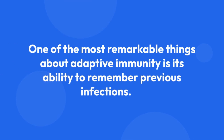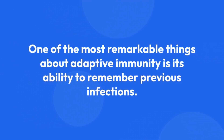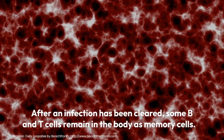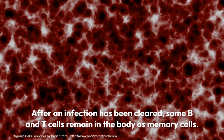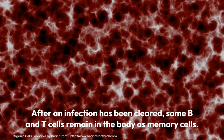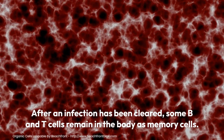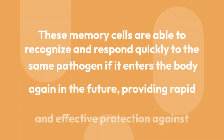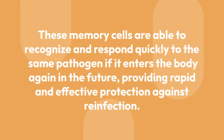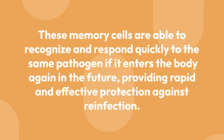One of the most remarkable things about adaptive immunity is its ability to remember previous infections. After an infection has been cleared, some B and T-cells remain in the body as memory cells. These memory cells are able to recognize and respond quickly to the same pathogen if it enters the body again in the future, providing rapid and effective protection against reinfection.